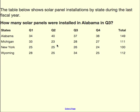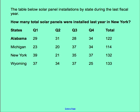Over on the right, it totals all of Q1, Q2, Q3, and Q4 together and gives the total. The next question: the table below shows the solar panel installations by state during the last fiscal year — that means the last year of business. How many total solar panels were installed last year in New York? Look at the information and figure out the total solar panels installed in New York.